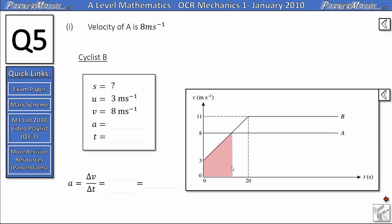We are going to use all the way up to 20 seconds here. So the change in velocity is 11 subtract 3 and the time it takes to do that is 20 seconds. 11 take 3 is 8 which gives us 8 over 20 which is 4 over 10 or 0.4 metres per second squared. So we now know the acceleration.